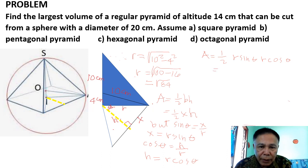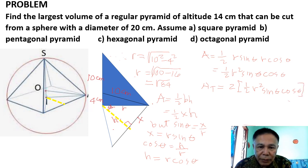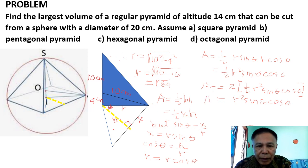So the area equals one half R squared sine theta cosine theta. For the total triangle, the total area equals 2 times one half R squared sine theta cosine theta, which simplifies to R squared sine theta cosine theta. This is your total area.